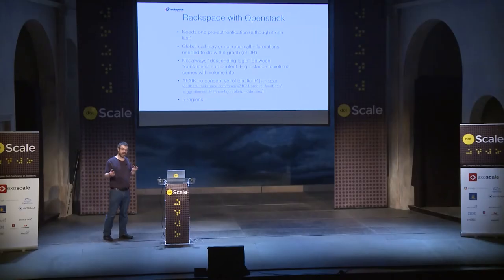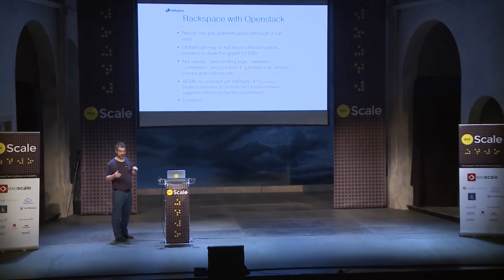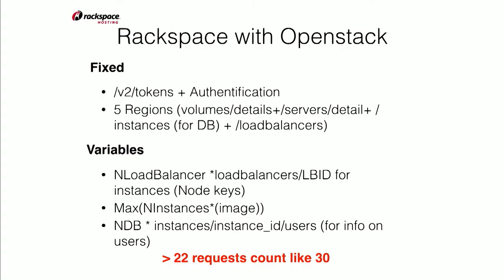And you have five regions. Something else is that the logic between what is connected to what is not the same as in AWS. For example, the volume has an attachment, and the instance has no attachment by itself — it's not returned in the main high-level queries. So what do we have? Fixed, we have a token. Then we have five regions: give me volume details, server details, instance for DB, and load balancer. That's 20 requests plus one. And then you have the variable, so it goes to 30. That's better, but if we compare ratio per region, it's really not as good as AWS.